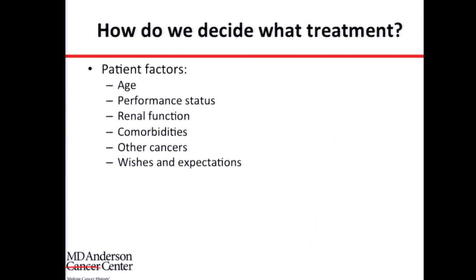We also have to think about performance status. An 80-year-old who is very active and works is very different from an 80-year-old who is wheelchair-bound. We also need to consider kidney function — if the patient has both kidneys and one functions well, and has a local recurrence in one kidney, we might decide to remove the whole kidney rather than attempt a repeat partial nephrectomy.